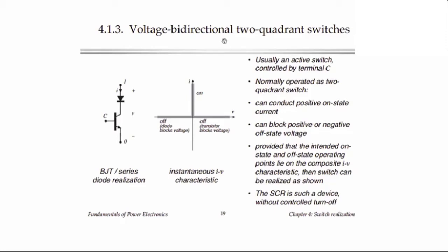We can build a voltage bidirectional switch by putting two single-quadrant switches in series, one of which blocks positive voltage and one of which blocks negative voltage. Here is one well-known way to do it, in which we put a diode and a transistor in series.